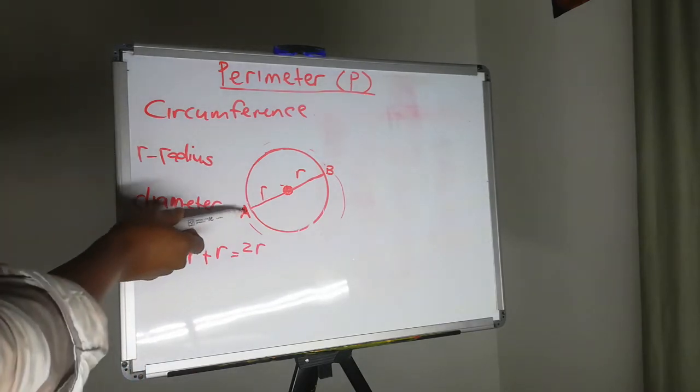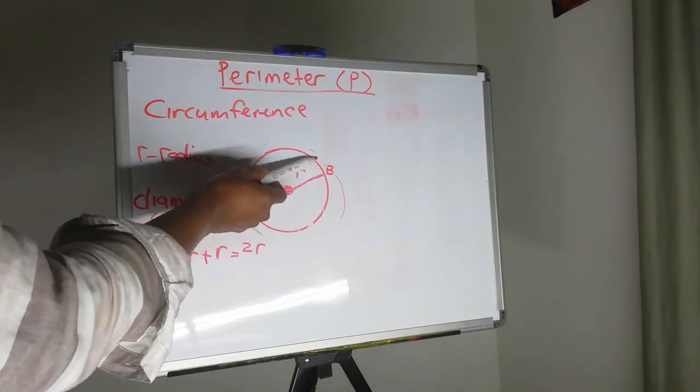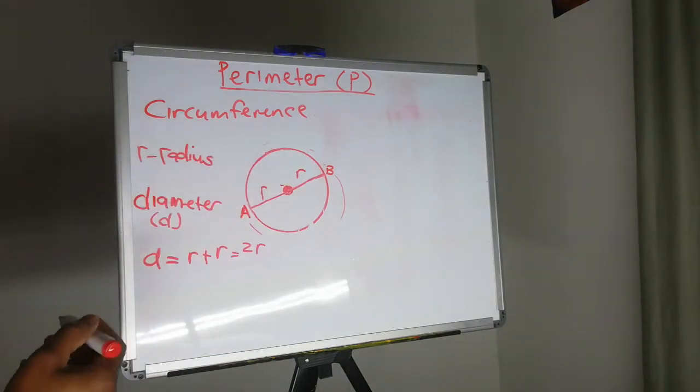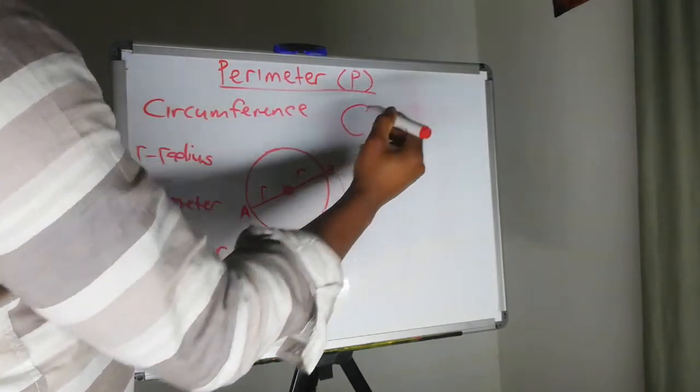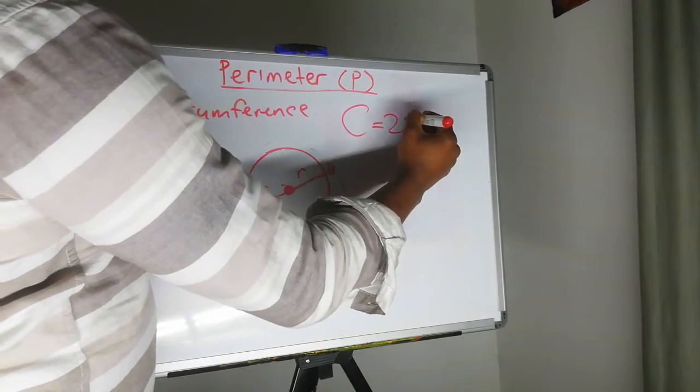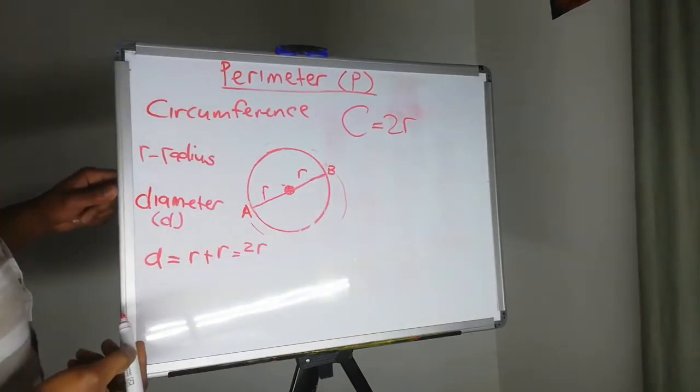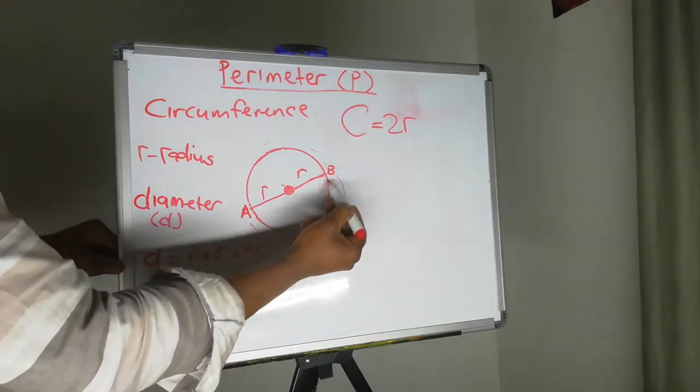So we are moving from A to B and then from B to A. So the circumference of a circle is equal to two radii because we move from this point all the way around.